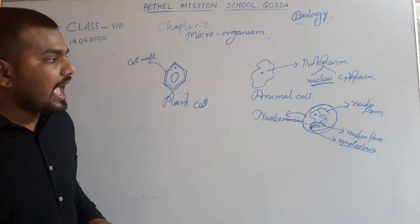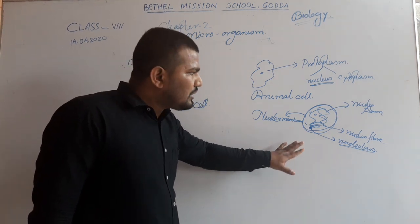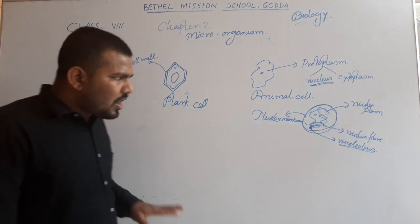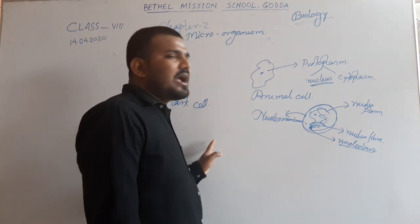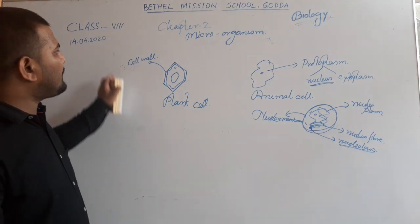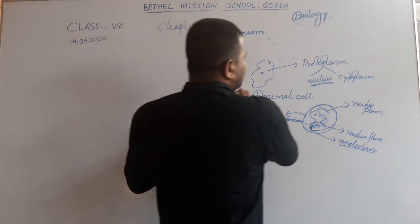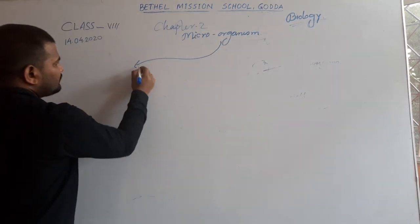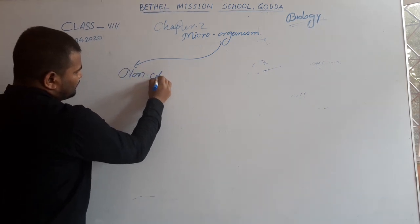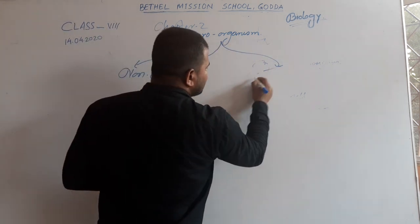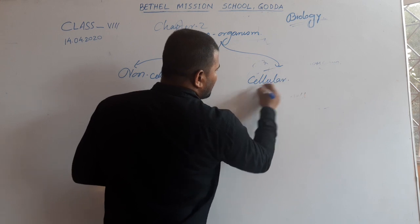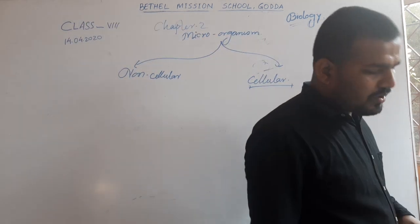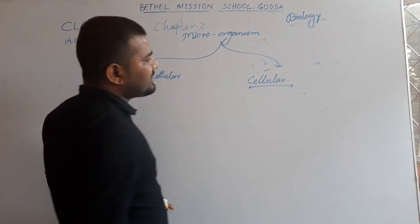A cell having a well-developed nucleus with these four parts is termed as a eukaryotic cell. A cell which does not contain any well-developed nucleus, having an ill-developed nucleus, is termed as a prokaryotic cell. On the basis of cell structure, microorganisms are divided into two categories: non-cellular type and cellular type. Microorganisms that do not contain any type of cell are termed as non-cellular microorganisms, and those formed by cells are termed as cellular microorganisms.